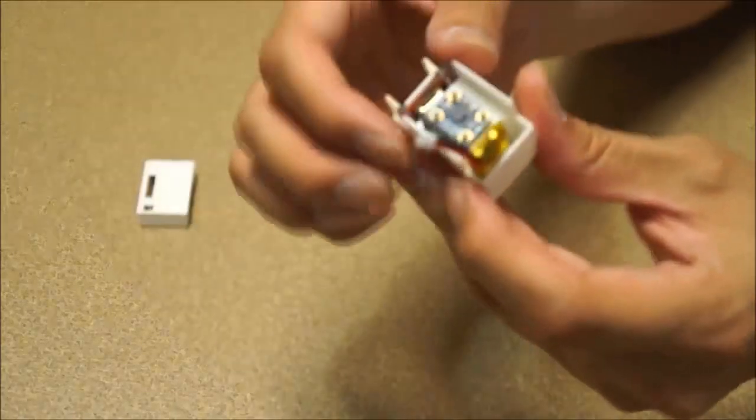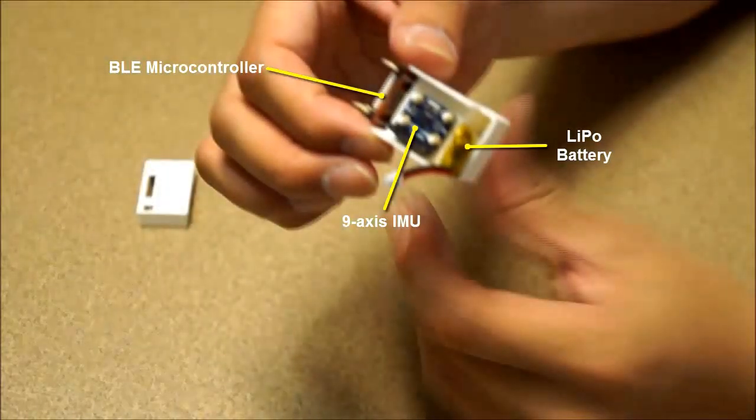We embed a 9-axis IMU, BLE integrated microcontroller, and a lithium polymer battery in the ring.